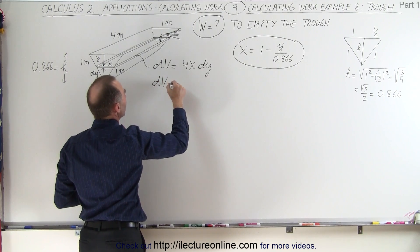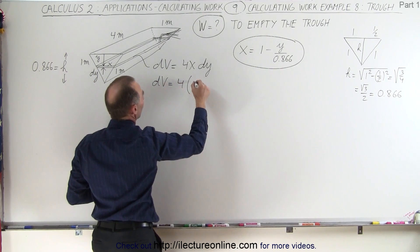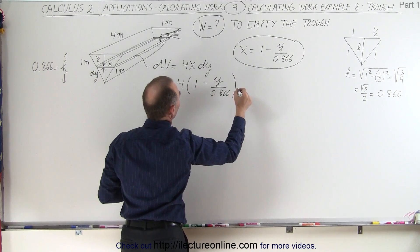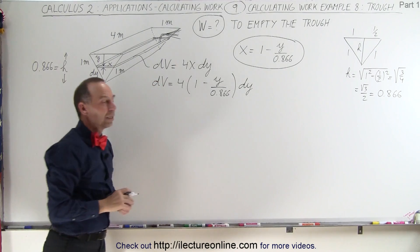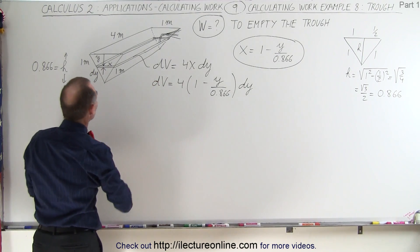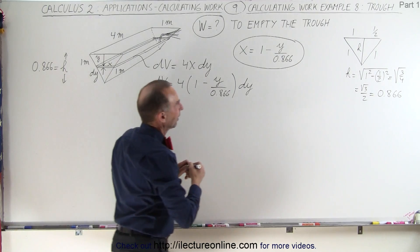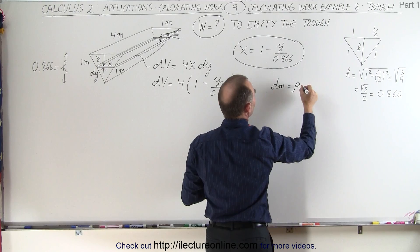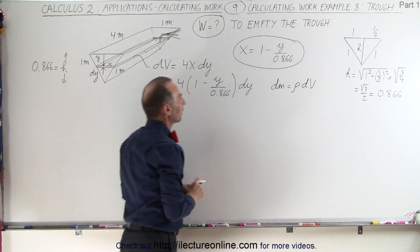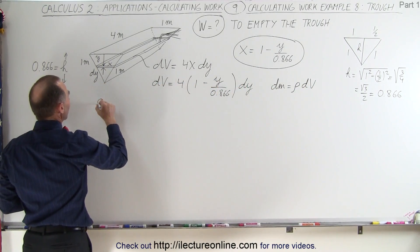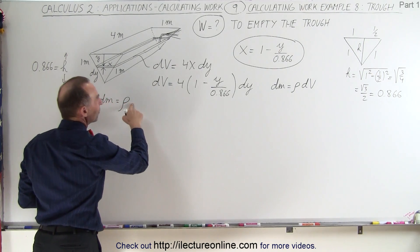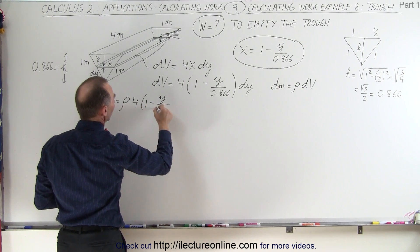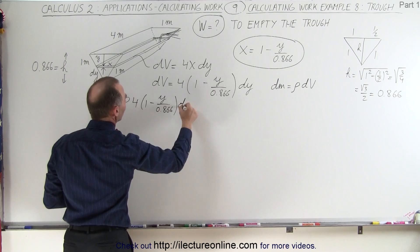So our small amount of dV is equal to 4 times 1 minus y over 0.866 times dy. Of course, we need to know more than that. We actually need to know the mass of this slice, and so we can say that dm, the small amount of mass, is going to be equal to the density times the volume. That means that dm is equal to the density times dV, and dV will be 4 times 1 minus y over 0.866 times dy.